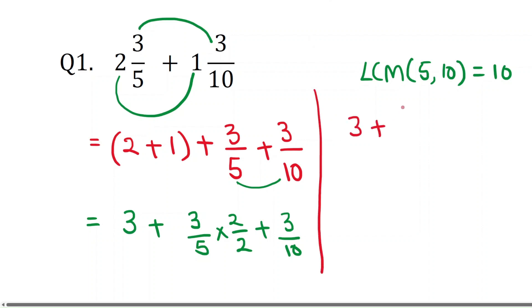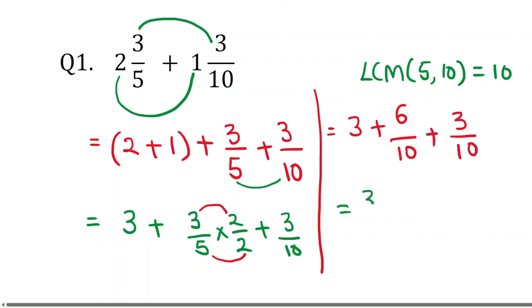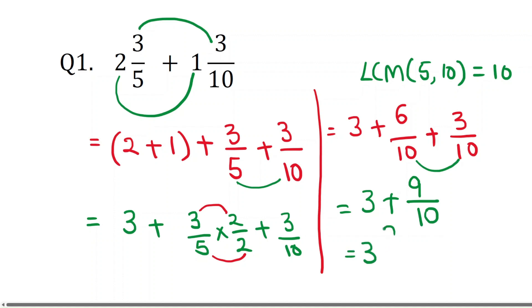Multiply numerator by numerator and denominator by denominator: that gives 6/10. So we have 3 plus 6/10 plus 3/10. The denominators are the same, so add the numerators: 6 plus 3 is 9. The common denominator is 10. The answer is 3 and 9/10.